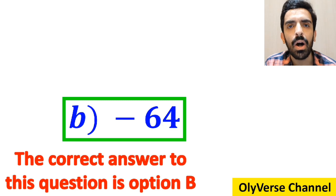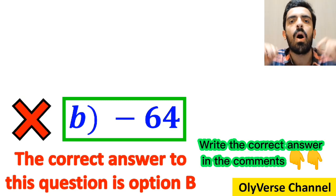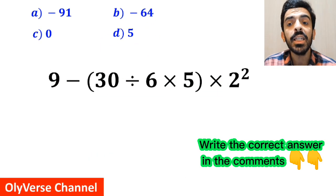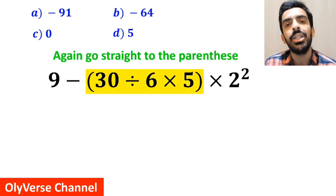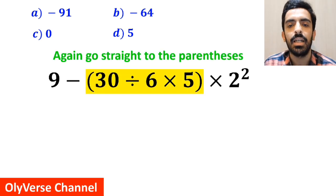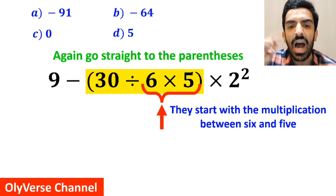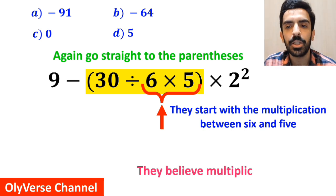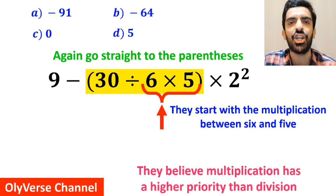However, this answer is absolutely wrong. Also, some other people when solving this question again go straight to the parenthesis, but this time they start with the multiplication between 6 and 5, because they believe multiplication has a higher priority than division.